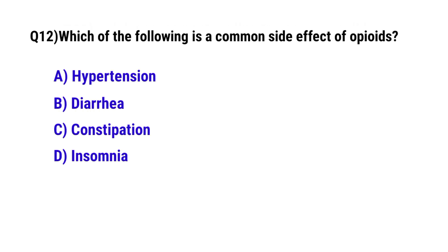Question number 12. Which of the following is a common side effect of opioids? The correct option is C. Constipation.